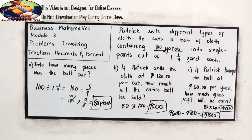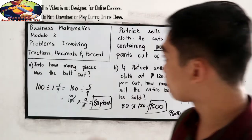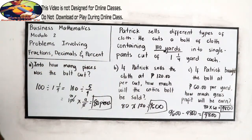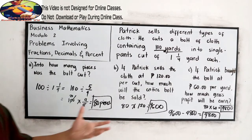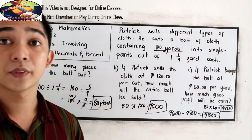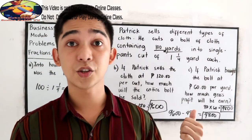The gross profit is 4,800 pesos, which is twice his capital. These are problems involving fractions, decimals, and percent. We just need to analyze the given problem. Thank you for watching Senior Pablo TV.